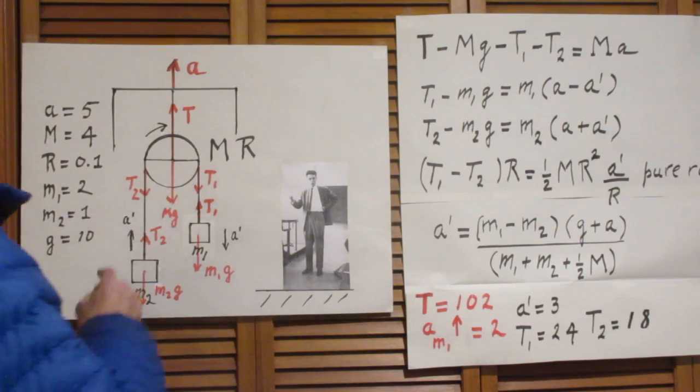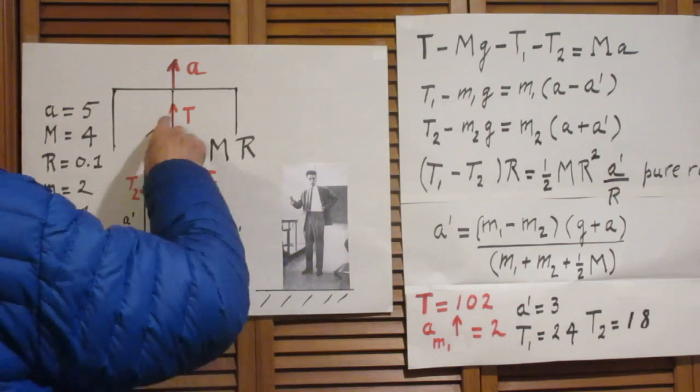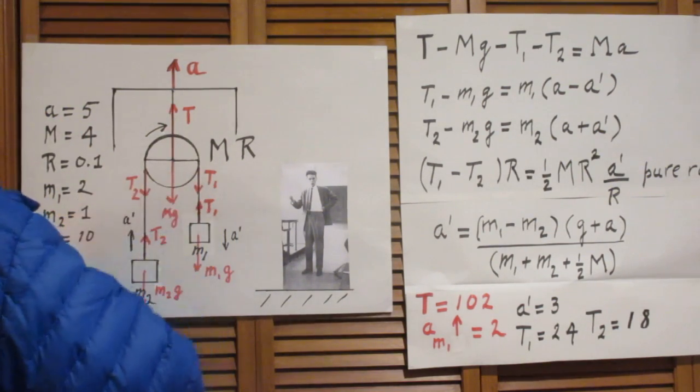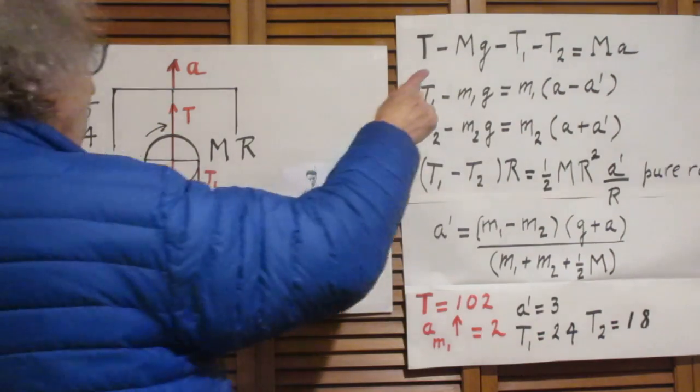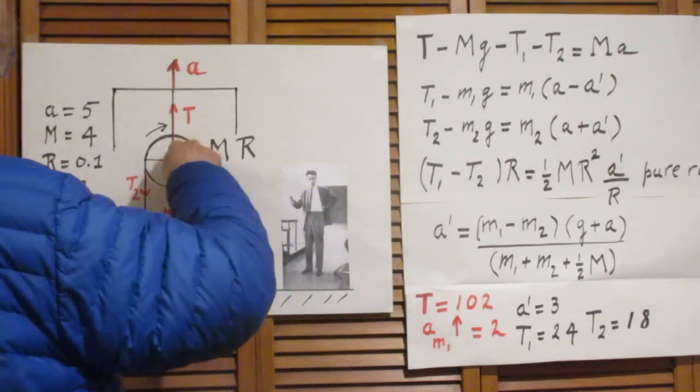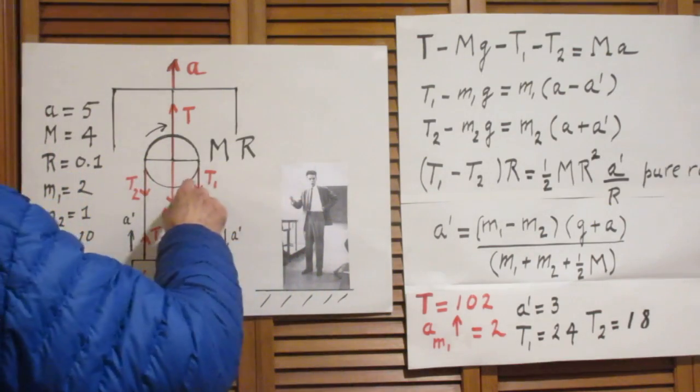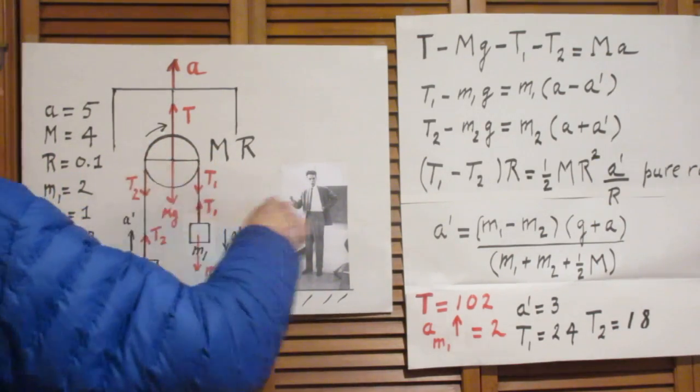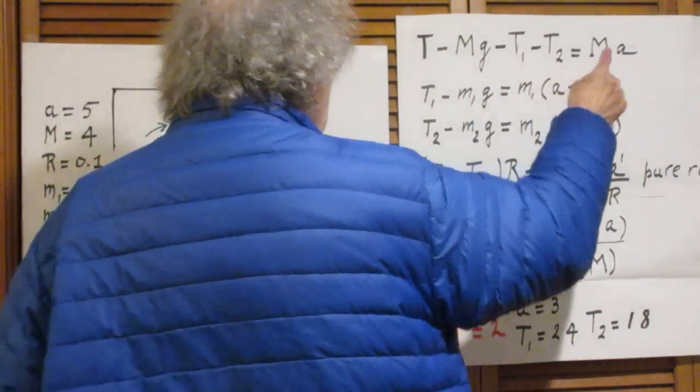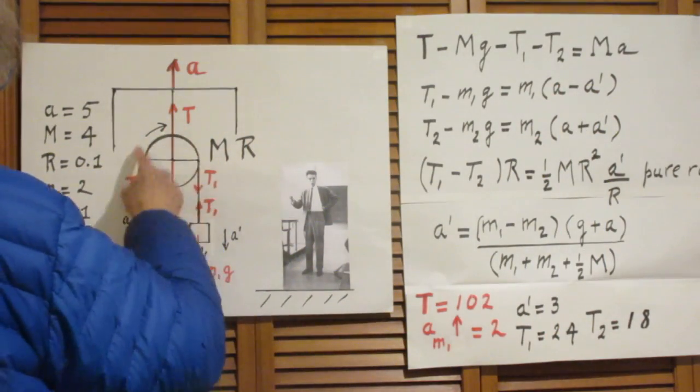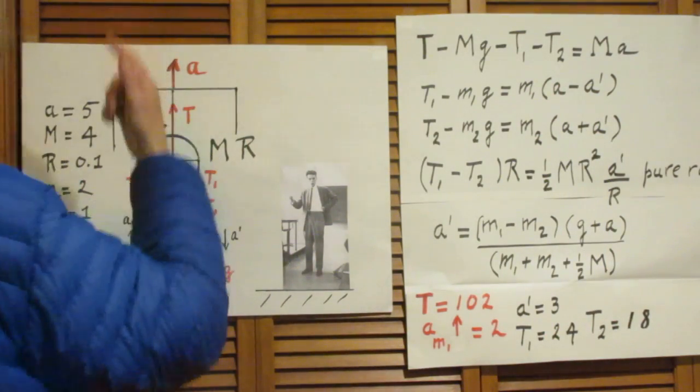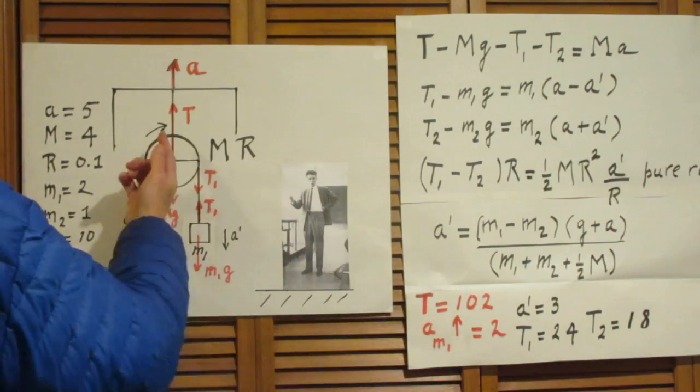Let's now start with the tension T. The tension T minus Mg minus T1 minus T2 equals Ma, because this object is being accelerated with acceleration a upwards.